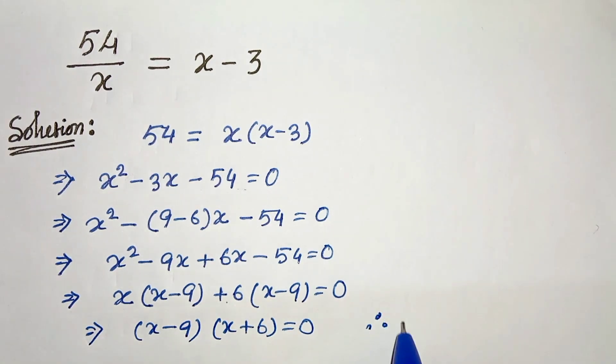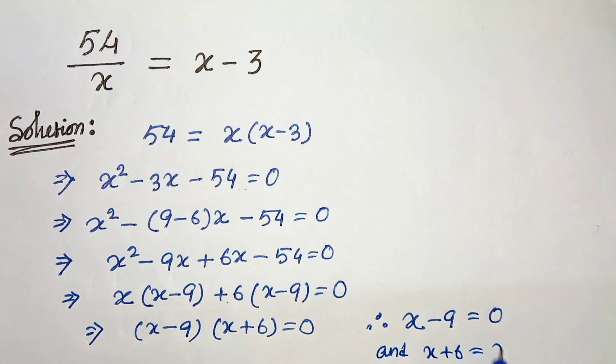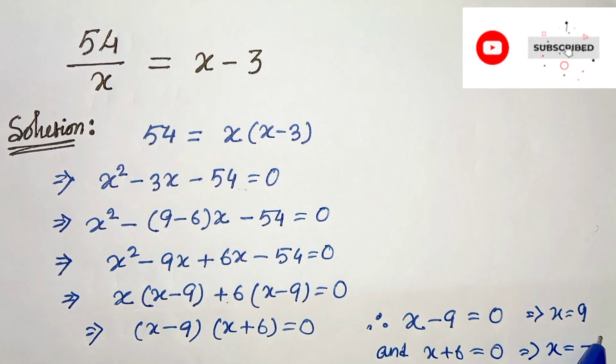Therefore, our solutions are x minus 9 equals 0 and x plus 6 equals 0, which gives x equals 9 and x equals minus 6.